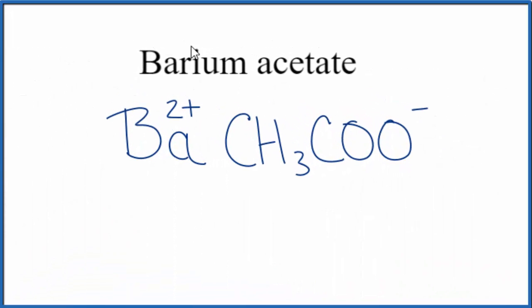So because barium acetate is neutral, it doesn't have the word ion after it, these charges, this 2+ and then this 1-, they need to balance. So we can put parentheses around the acetate ion, and then we could put a 2 here. 2 times 1-, that's 2-, that'll balance out the 2+, the net charge will be 0. So this is the formula for barium acetate.